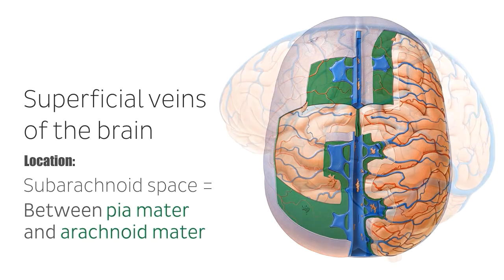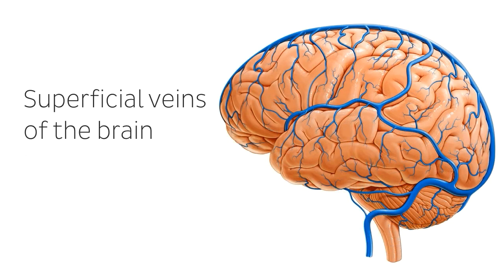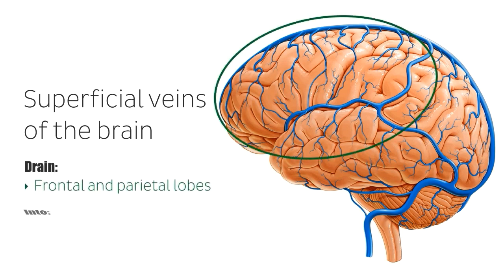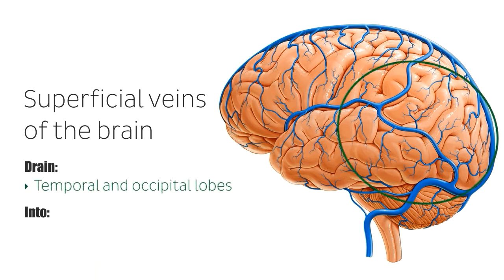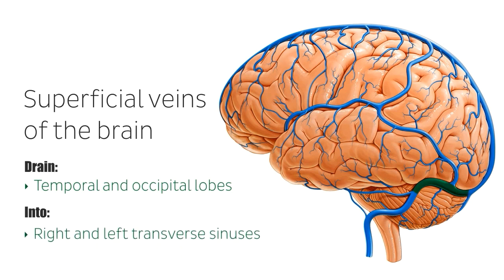Let's take a couple of minutes to talk about the drainage of the superficial veins of the brain. As you can see on the image, the superficial veins of the brain form an anastomotic network, connecting extensively with each other and to the deep cerebral veins. The superficial veins of the brain drain blood from various regions into sinuses in the brain. The frontal and parietal lobes drain into the superior sagittal sinus, and blood from the temporal and occipital lobes drains into the right and left transverse sinuses, though in this image we're only looking at the left transverse sinus. The deep cerebral veins drain either into the straight sinus or the transverse sinuses, but again we'll talk more about these in another tutorial.